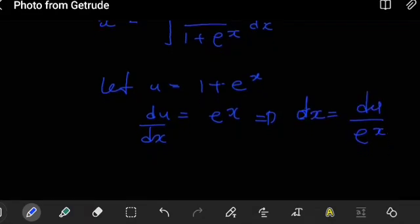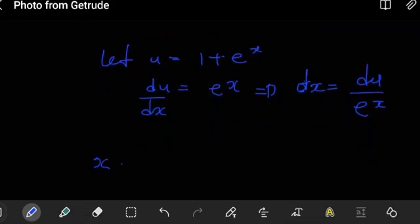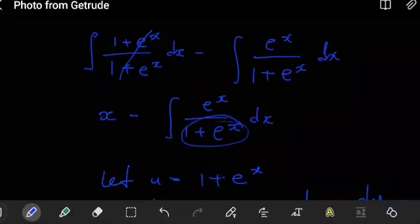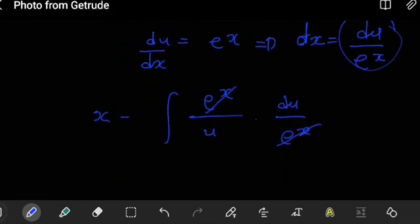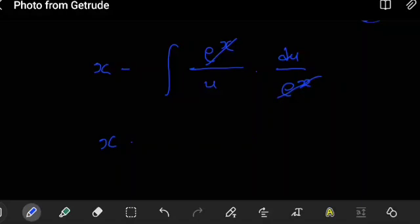So when we substitute, our answer is going to be x minus the integral of... we had e to the x on top, over the denominator which is what we said u is going to be, and then where this dx is, we'll plug in that it's going to be du over e to the x. The e to the x will cancel with that, leaving us with the integral of 1 over u du.